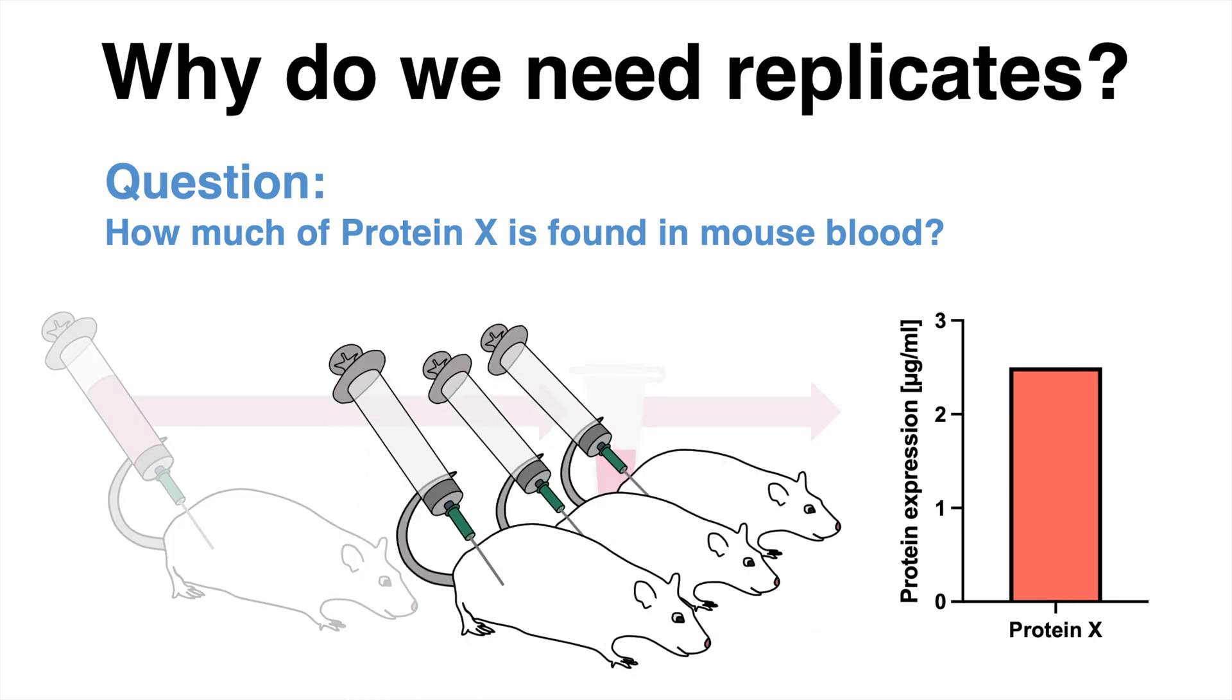Imagine three more mice are used in that experiment. From each of those, a blood sample is extracted. Plotting the data now, it seems like all of those mice express significantly less of protein X compared to the first mouse.